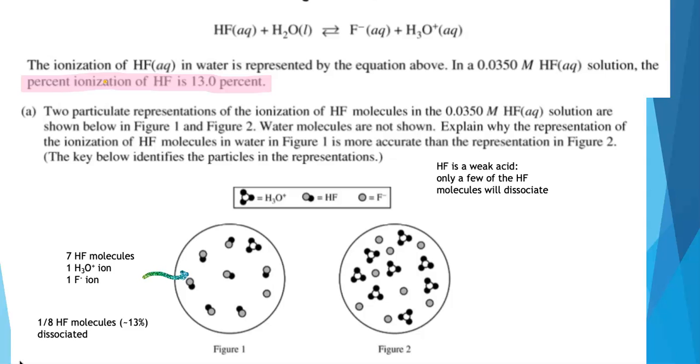If we look at figure 2, I see 8 hydronium ions. I see 8 fluoride ions. I don't see any HF molecules. Every single HF molecule that was present has dissociated to ions. That looks more like a strong acid to me, 100% dissociation.